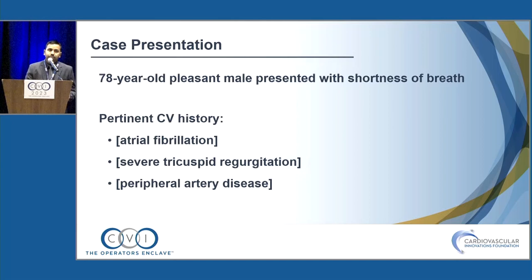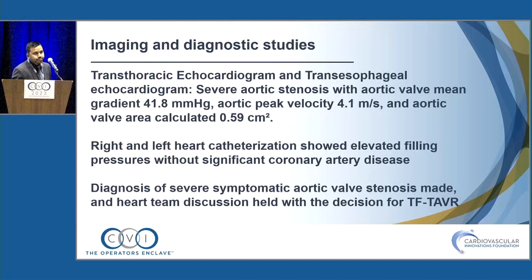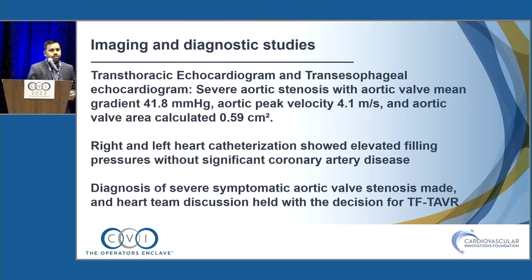I have no disclosures. My patient is a 78-year-old male with a history of atrial fibrillation, severe tricuspid regurgitation, and peripheral artery disease who presented with shortness of breath. TTE and TEE showed severe aortic stenosis: mean gradient 41.8 mmHg, aortic peak velocity 4.1 m/s, aortic valve area 0.59 cm². He underwent right and left heart catheterization with no significant coronary artery disease. The heart team decided on transfemoral TAVR.